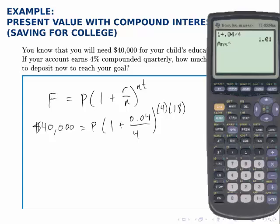And I want to raise that to the power of 4 times 18. Again, being careful to put that in parenthesis, so that the calculator first multiplies 4 times 18, and then raises 1.01 to that power. And that equals 2.047, et cetera.